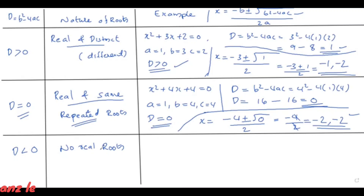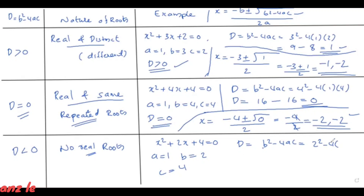For the case D less than zero — no real solutions. For example, b squared minus 4ac: here b is 2, so 2 squared minus 4 times 1 times 4, that is 4 minus 16, equals minus 12. So D is minus 12, which is less than zero — no real roots.